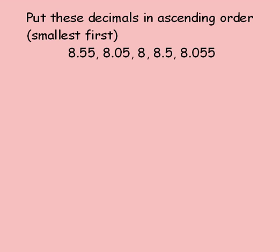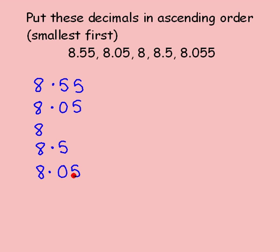Here's another one for you. Press pause and have a go. When you're ready, press play. Remember to begin by lining the decimal points up. Because this number here only has units, we can't see the decimal point, but I just line it up with the units column. Now I can put in the extra zeros.